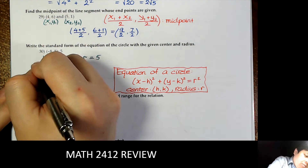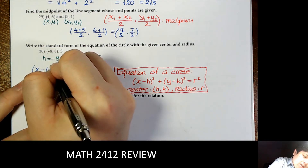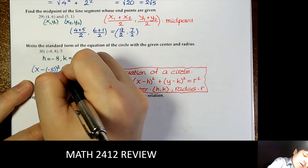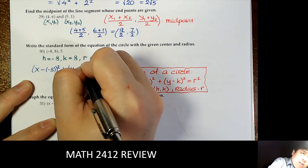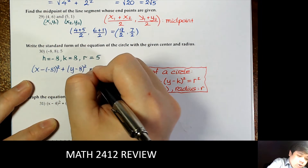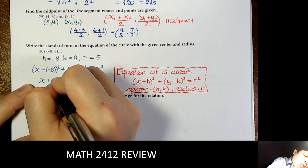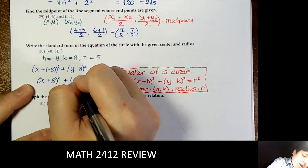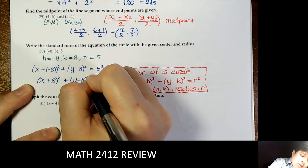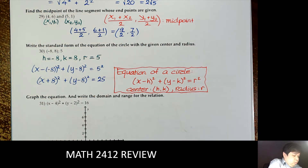We substitute into the equation: (x minus negative 8) squared plus (y minus 8) squared equals r squared, which gives (x plus 8) squared plus (y minus 8) squared equals 25. That's the equation of the circle.